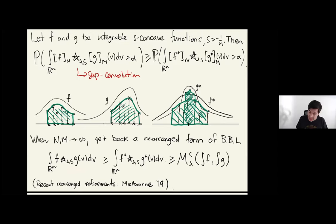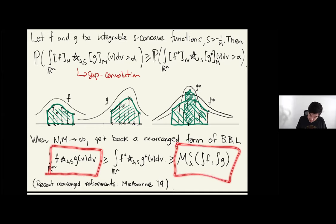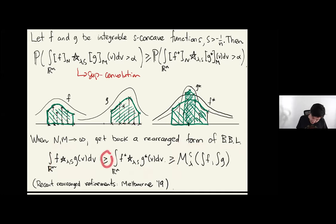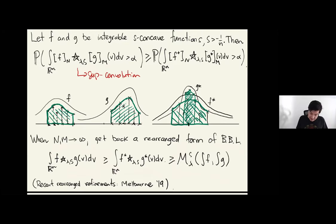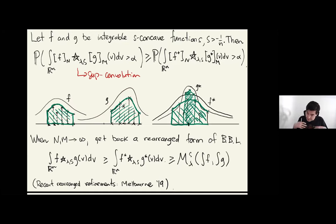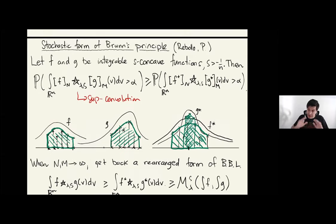What do I get back? A refinement of the Borell-Brascamp-Lieb inequality. The Borell-Brascamp-Lieb inequality compared the supremal convolution of F and G with the rearrangements, and there's a strictly stronger version where you can always sandwich the rearrangement. What the inequality above says: this strictly stronger version itself has a stronger stochastic version. The idea of minimizing the integral of the supremal convolution of F and G holds at a local random level, and when you approximate, you see the inequality.